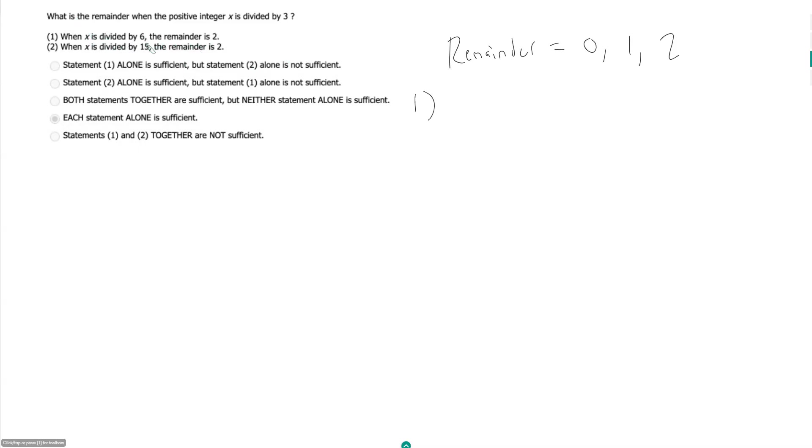So I can actually translate this statement algebraically by saying this is telling me x is equal to 6 times some multiplier or some quotient. We'll call it y. This is some integer multiplier plus 2. So if I want to, I can very quickly now generate a bunch of examples of x and then see what the remainder is when I divide by 3.